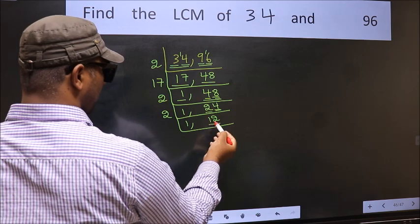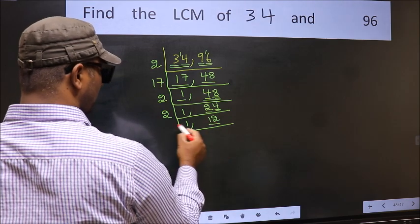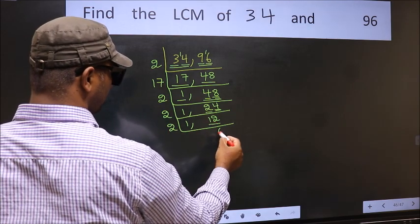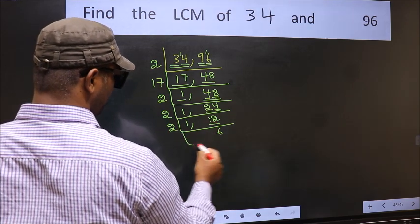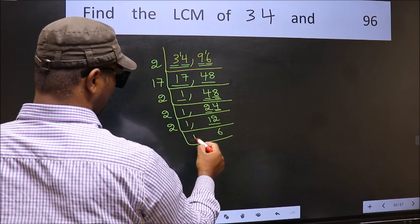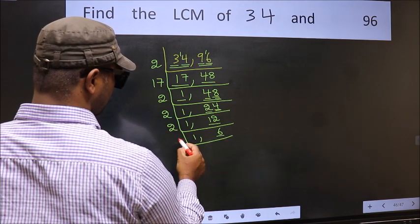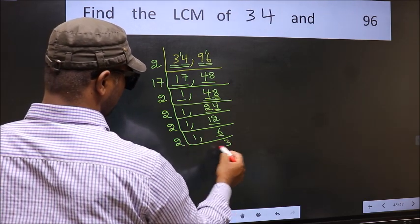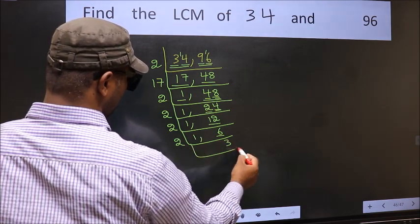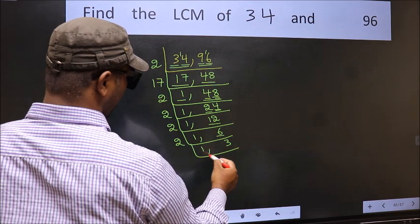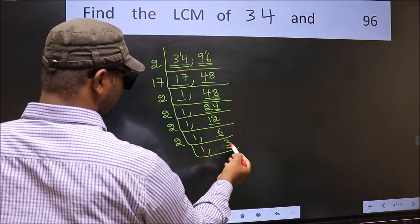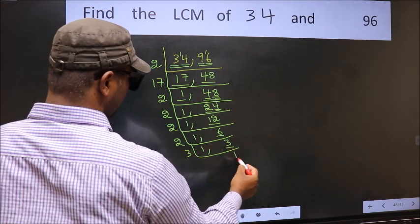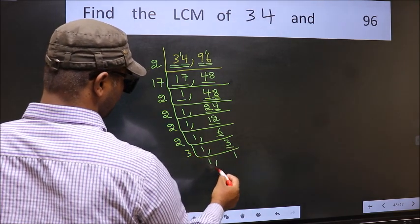Now here we have 12: 12 is 2 times 6, so divide by 2 to get 6. Now we have 6: 6 is 2 times 3, divide by 2 to get 3. Now we have 3: 3 is a prime number, so 3 once is 3. We got 1 in both places.